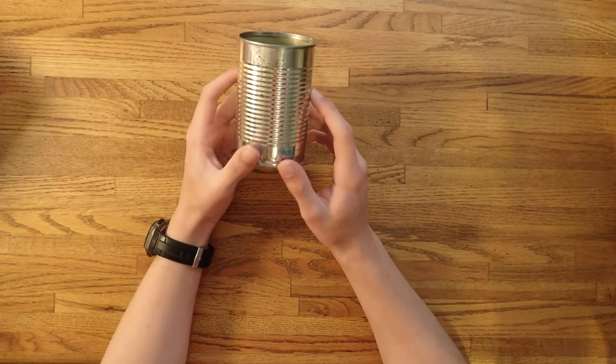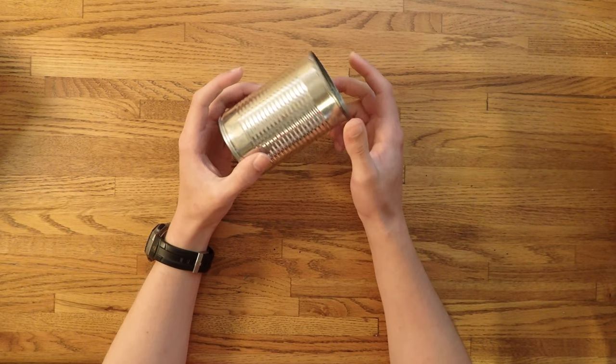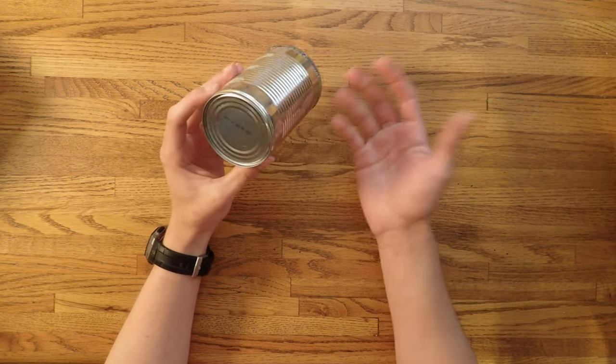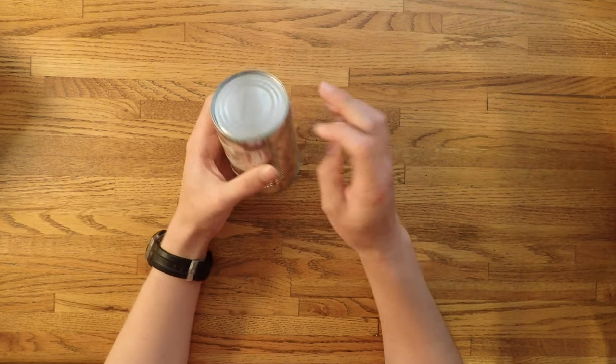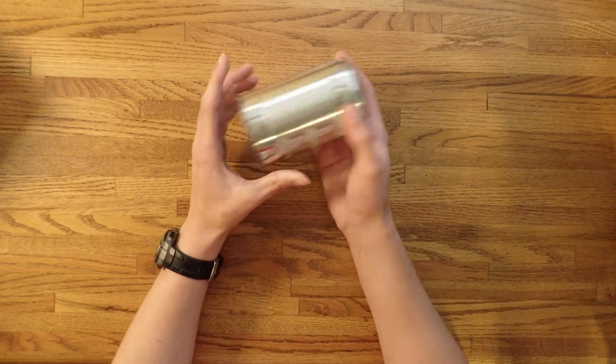First you have to start out with just a normal old tin can. Then what you need to do is remove the bottom so that you have a tube of metal and then cut along the side and pound it flat.